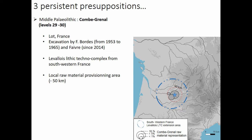Actually, these are not just presuppositions — they are based on observations from some sites. A typical example of congruence is from the Middle Paleolithic in the Lot, where levels 29-30 deliver a Levalloisian techno-complex material. This techno-complex is typical of southwestern France, and what we see for these levels is a provisioning area not exceeding 50 kilometers, fitting well with the presuppositions.